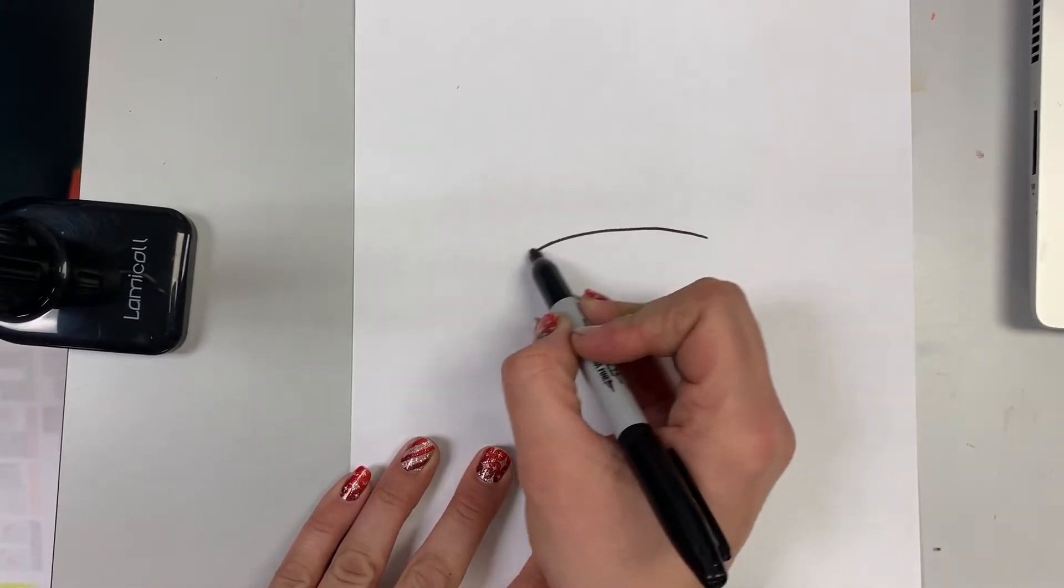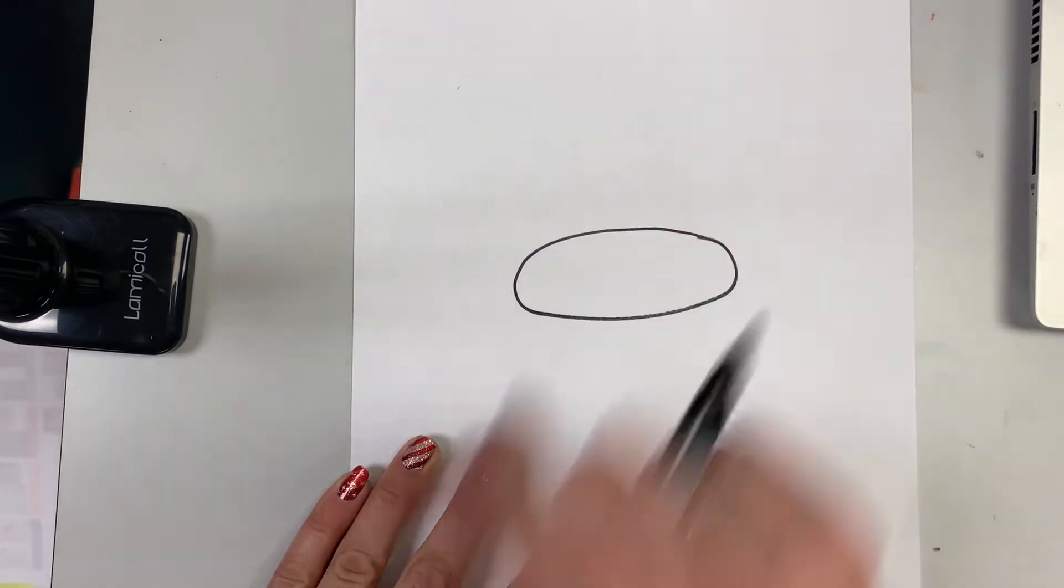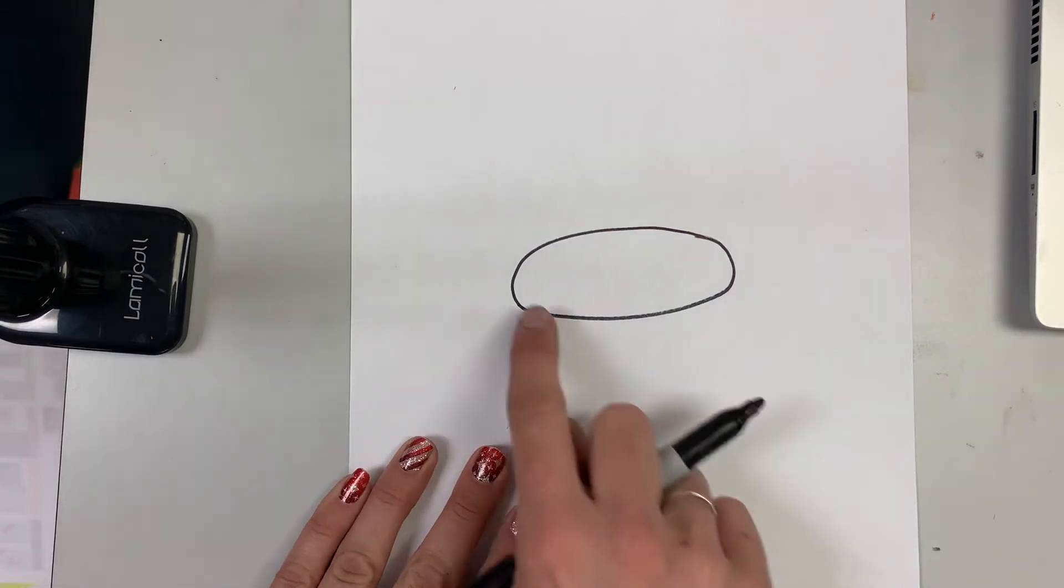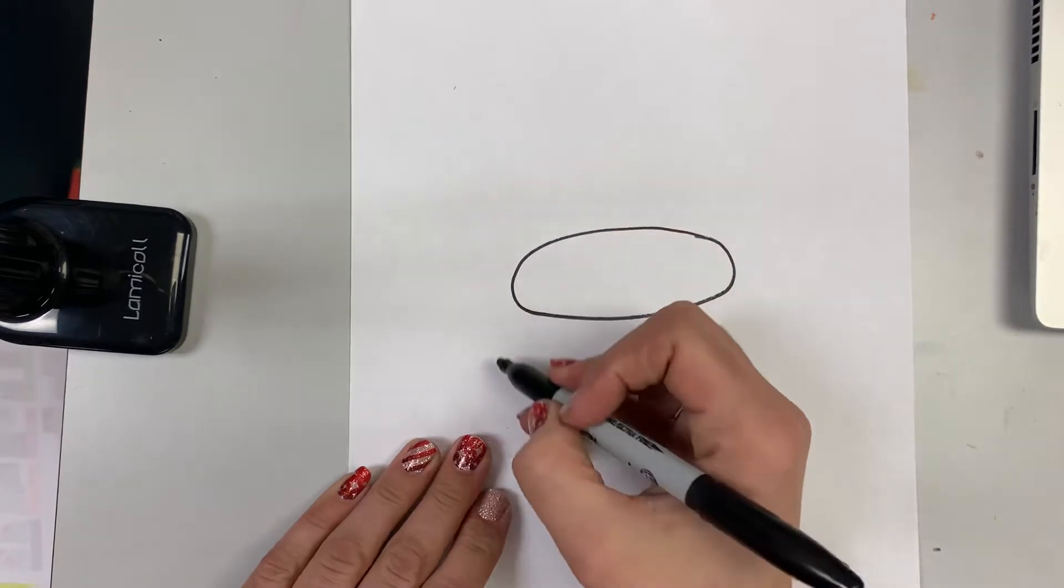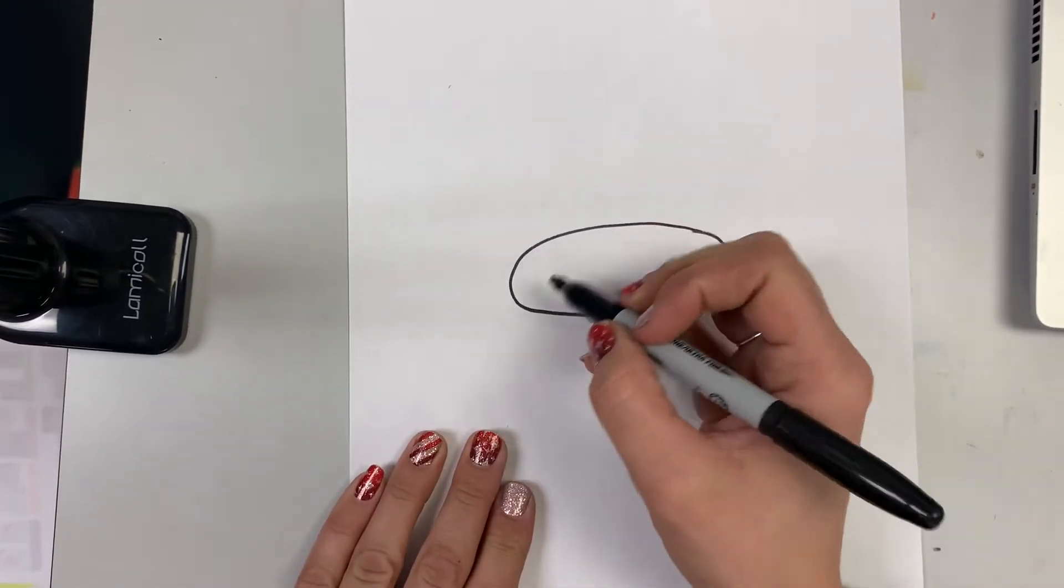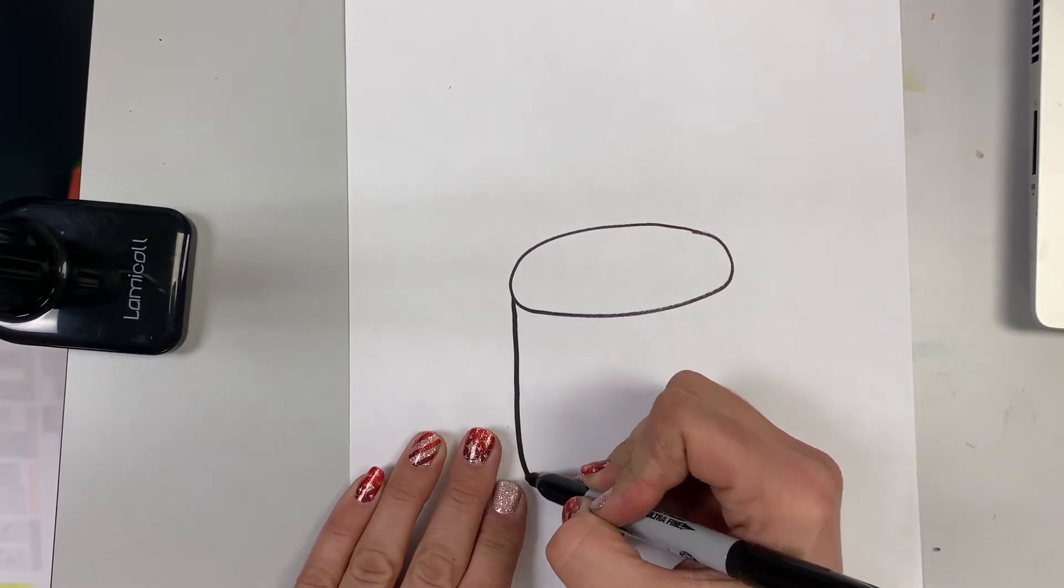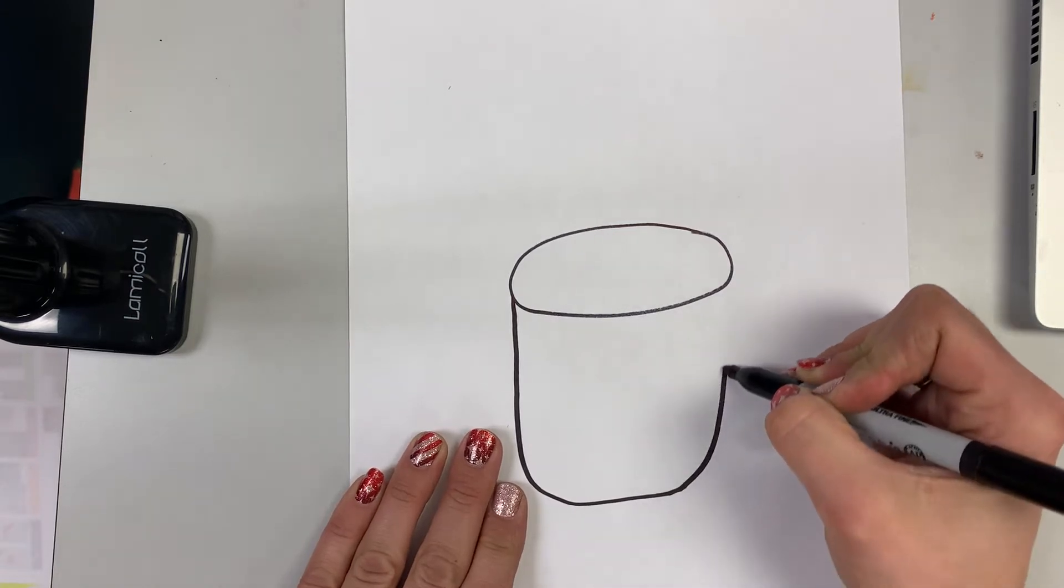So first and foremost I'm going to create my mug. What I want to do is create an oval shape for the top of my mug. And underneath of that oval I'm going to create a u-shape that goes all the way around. So I want to start at one side, go down, curve, and come back up.